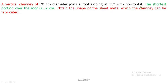Being a chimney on the roof, the roof slope is 35 degrees, and that roof slope is the section plane inclination, which is 35 degrees with horizontal. The diameter is 70 centimeter and the shortest portion over the roof is 32 centimeter. We will prefer dimensions in mm, so 70 centimeter will be converted into mm as per our convenience with the help of the scale value.